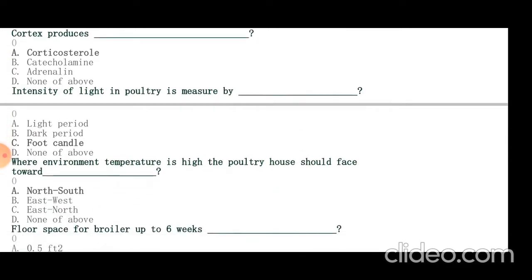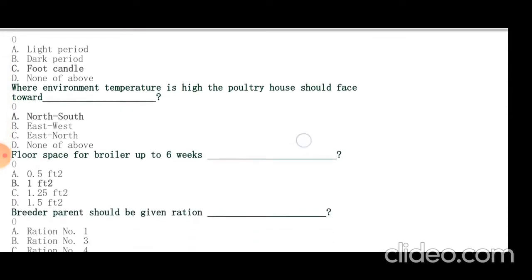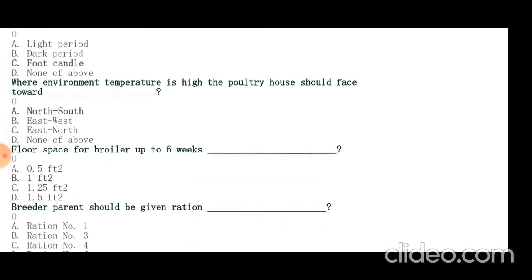When environmental temperature is higher, the poultry house should face toward north-south. Floor space for broiler up to 6 weeks is 1 feet square.